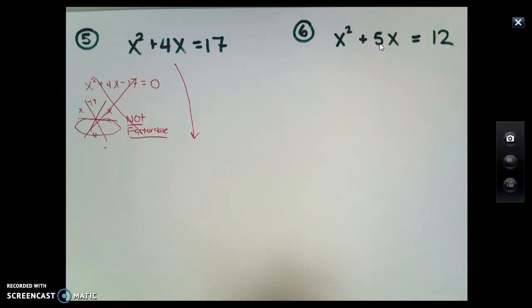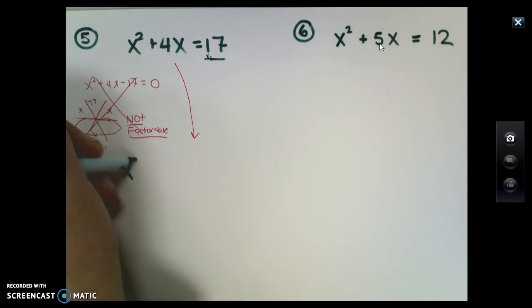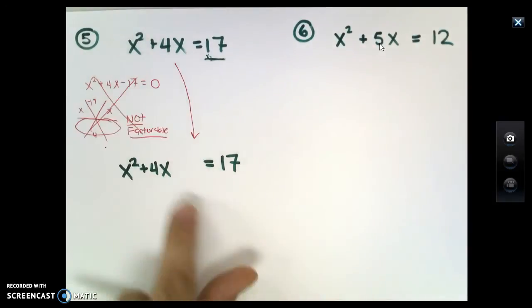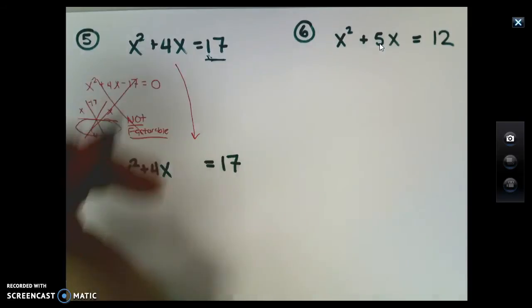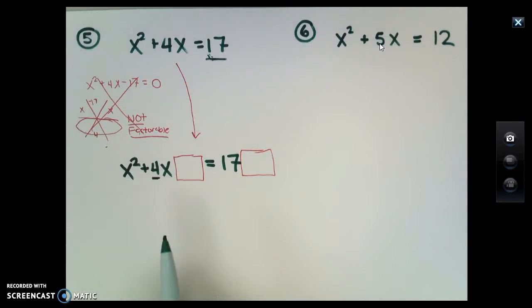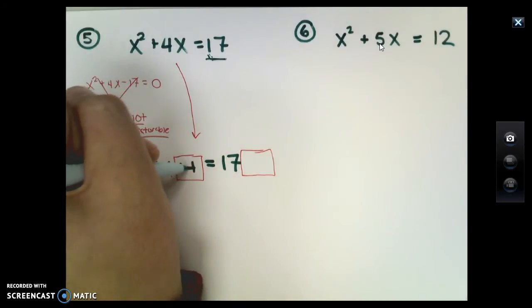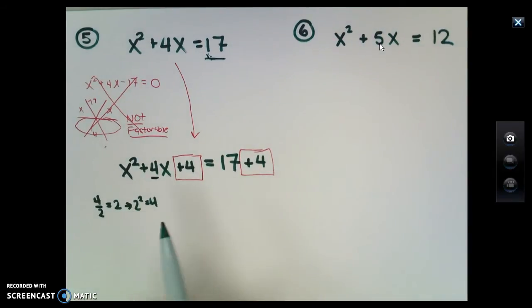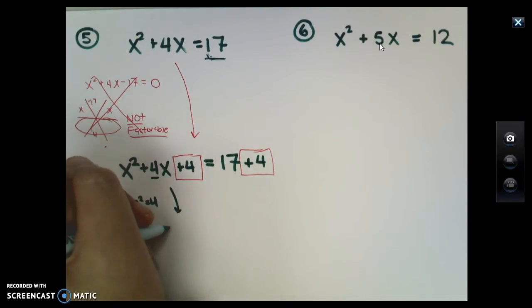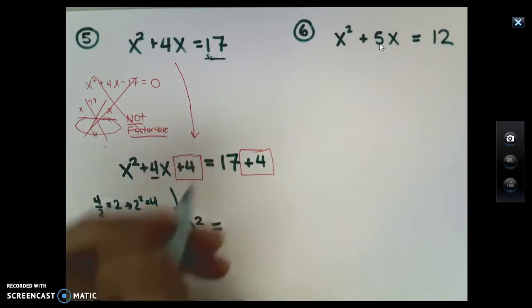We learned with completing the square that if you move your constant term, the one without an x, over to the right hand side like we already have, you can add a strategic term to both sides to allow the left side to become factorable. The number that we're going to put in is one half of the middle term, and then you square it. So half of 4 is 2, and then 2 squared is 4. The number I need to put in here is 4, and I must do that to the other side. This allows me to factor this to become x plus 2 quantity squared. This ends up being 21.